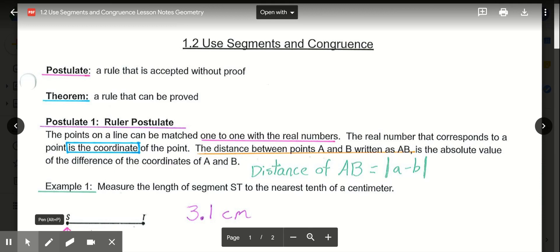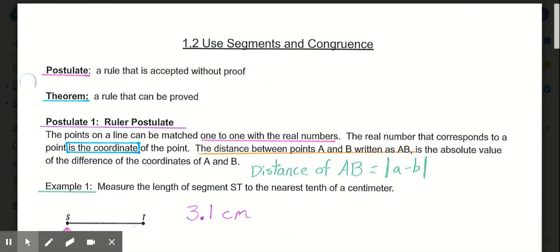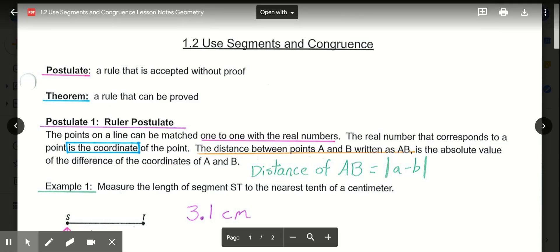So the first definition that we want to look at is the definition of a postulate. In geometry, a postulate is a rule that is accepted without proof. A theorem is a rule that can be proved. So we have a postulate, which we accept without proof, and a theorem, which is a rule that can be proved.